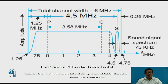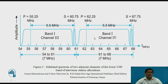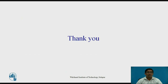In this way we studied examples from India, UK, and America, where the bandwidth requirements differ by country. The sideband spectrum of two adjacent channels of the lower VHF band of television — Band 1 Channel 4 and Band 1 Channel 3 — is shown. These are separated by a guard band, and the total channel bandwidth is 7 MHz including the guard band. Thank you.